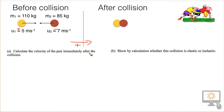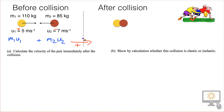The first question: calculate the velocity of the pair after the collision. We use conservation of momentum, which states that the total momentum before the collision equals the total momentum after, in the absence of any external resultant forces. The formula is: M1 times U1 plus M2 times U2 equals M1 plus M2 in brackets multiplied by the velocity after the collision — just one velocity, because they stick together.